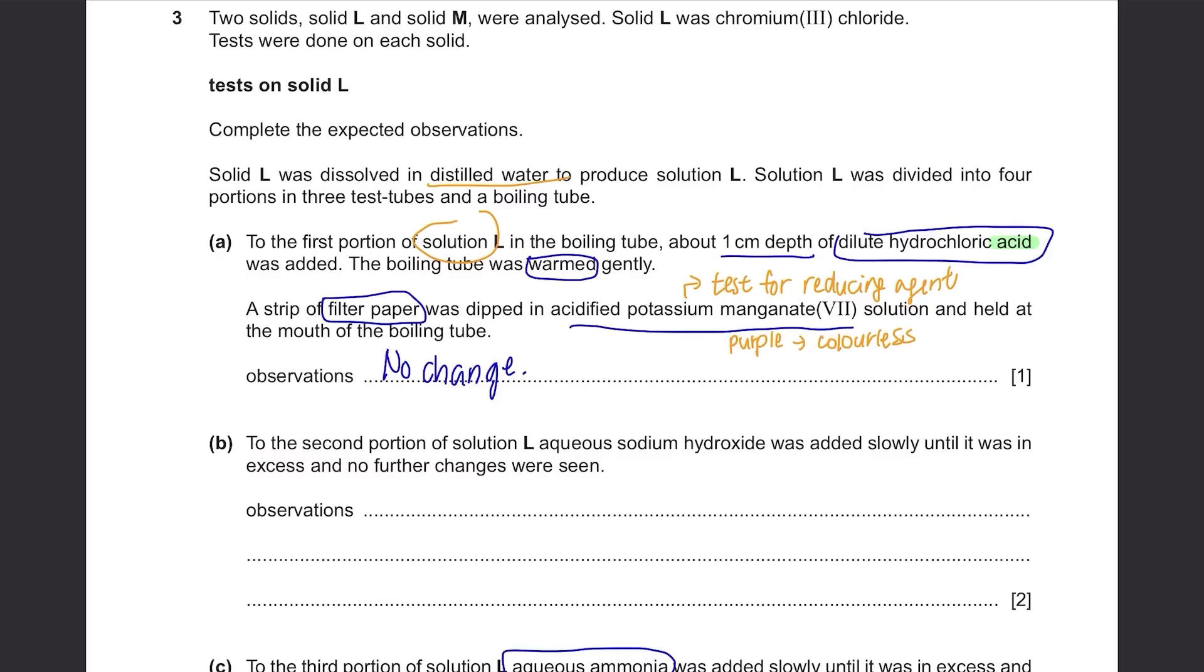Part B: To the second portion of solution L, aqueous sodium hydroxide was added slowly until it was in excess and no further changes were seen. If you add chromium(III) with aqueous sodium hydroxide, you know the results. It's one of the tests for aqueous cations. Green precipitate will be formed and since it's soluble in excess, green solution will be left.